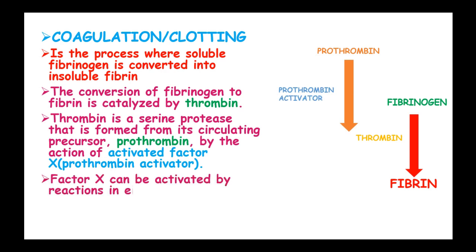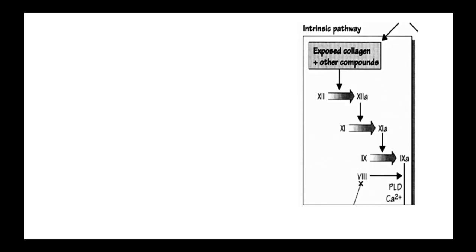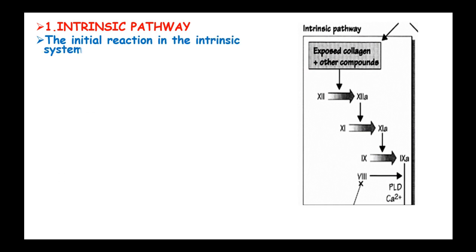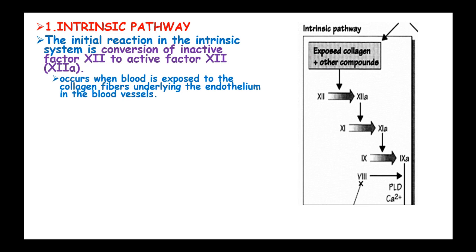Factor X can be activated by reactions in either of two systems: the intrinsic or extrinsic system. In the intrinsic pathway, the initial reaction is the conversion of inactive factor XII to activated factor XII, and this occurs when the blood is exposed to collagen fibers underlying the endothelium in the blood vessels.